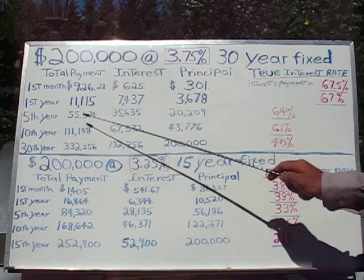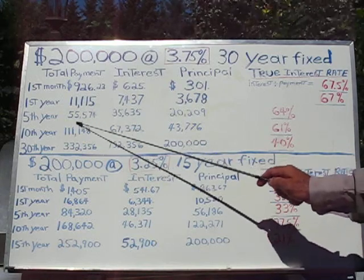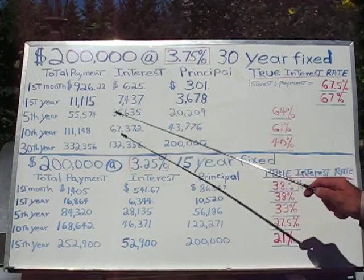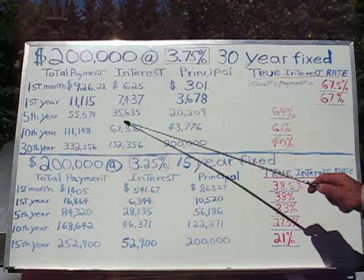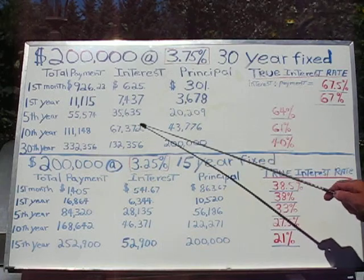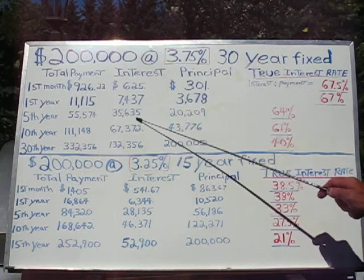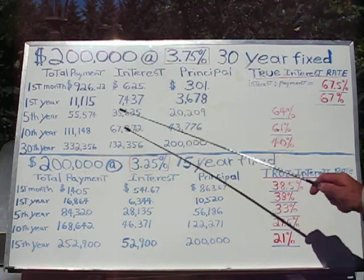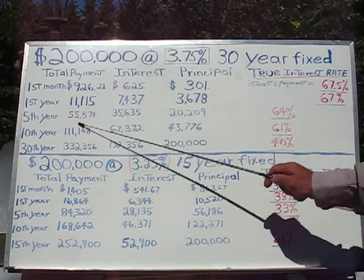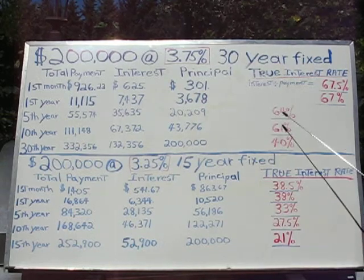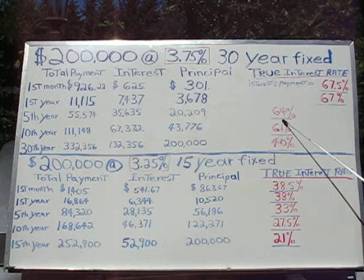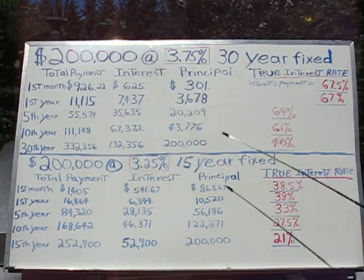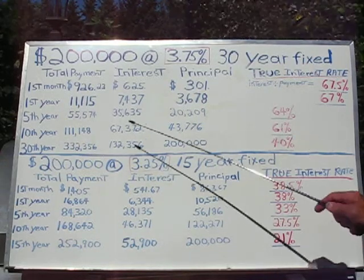Going down to the five-year totals: in five years, you've ended up paying a little over $55,000 in payments, out of which $35,635 was interest. Divide the interest by the total payment — the total true interest rate paid is 64%.